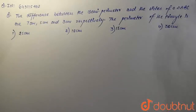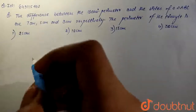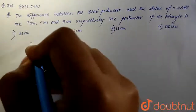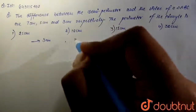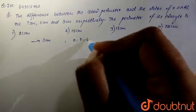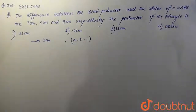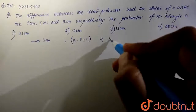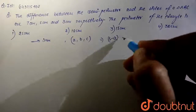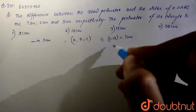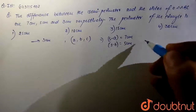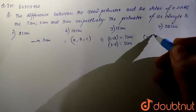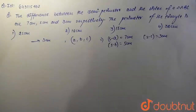So this question says the difference between the semi-perimeter and the sides is given. If we say the semi-perimeter is S and the sides are A, B, C, then what is given in the question is: S minus A is equal to 7 cm, S minus B is equal to 5 cm, and S minus C is equal to 3 cm.